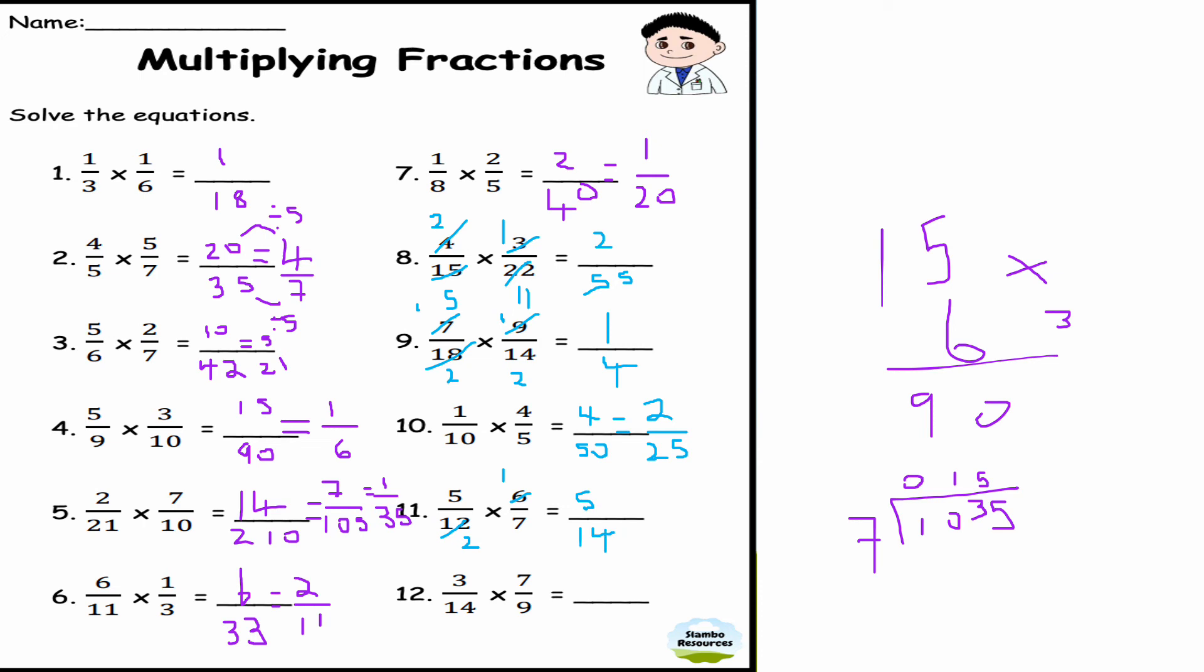This is question number twelve: 3/14 times 7/9. Well, dividing top and bottom by 3, I get 1/3 here. Dividing top and bottom by 7, I get 1 and 2. 1 times 1 is 1, and 2 times 3 is 6. That's my fully simplified answer.